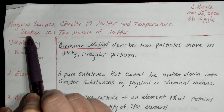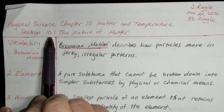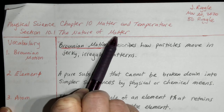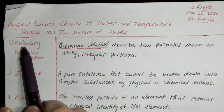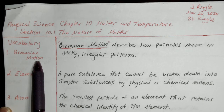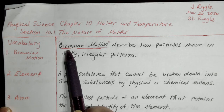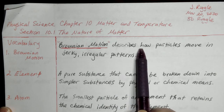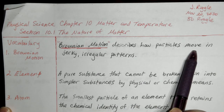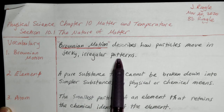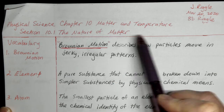These notes cover section 10.1, the nature of matter. First are vocabulary terms. Brownian motion describes how particles move in jerky, irregular patterns. So jerky — it looks kind of jerky.